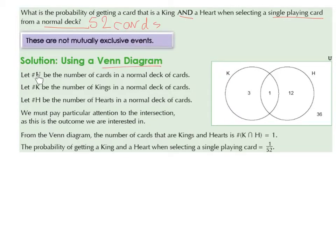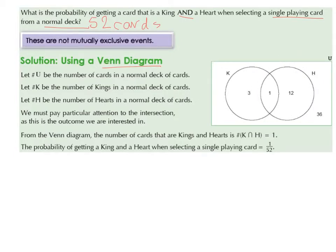Let the number of elements in the universal set be the number of cards in a normal deck. Let the number of elements of K be the number of kings, and the number of elements of H be the number of hearts in a normal deck. We start with our rectangle, labelled U for the universal set. We draw a circle labelled K for kings, and another circle labelled H for hearts. They intersect because there is one king of hearts in a deck of 52 cards.